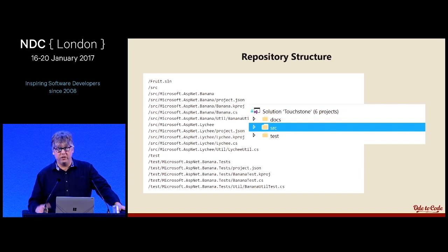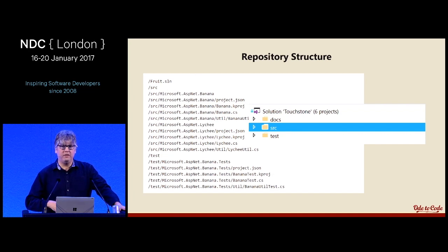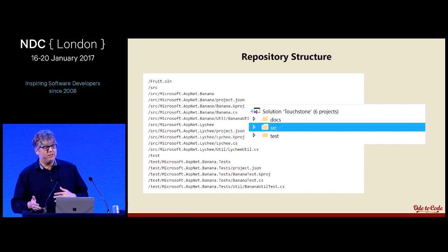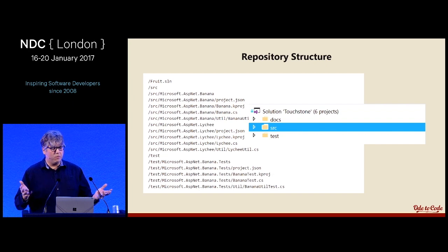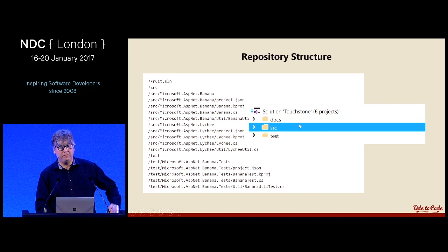I'll throw in a few additional folders — for example, a folder for documentation. One thing to be careful about: if you right-click on a solution in Visual Studio and add a new solution folder, the Solution Explorer doesn't faithfully represent the physical location of files on the file system. Those folders are just logical containers. If you add a file, it goes into the root of the project somewhere. So you have to right-click to add folders, then go to the hard drive, create the physical folder with mkdir, and add items from that folder.